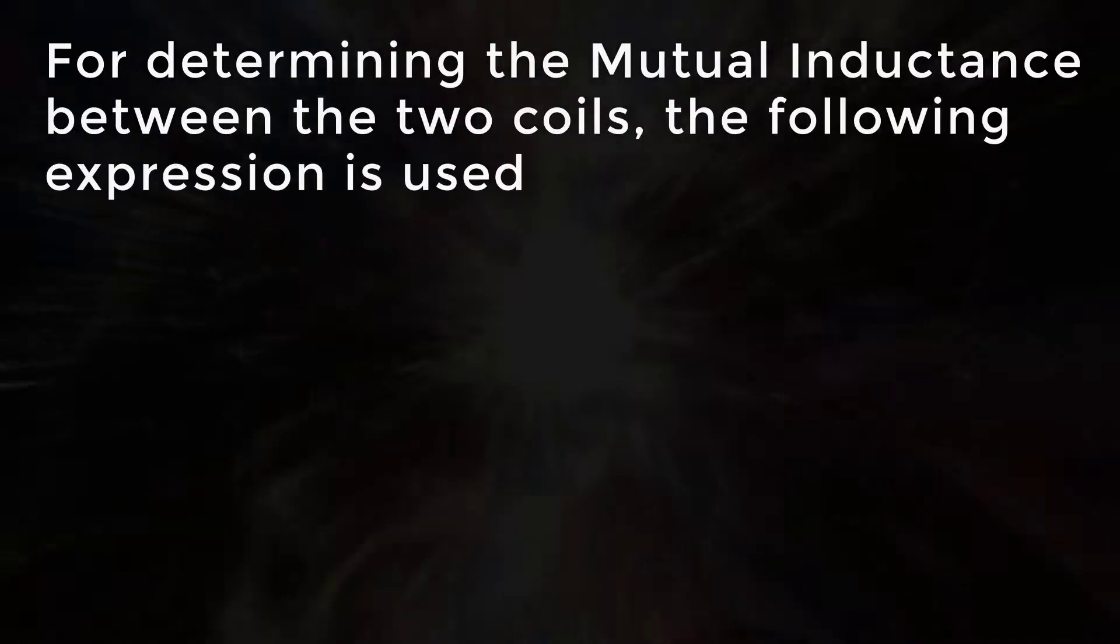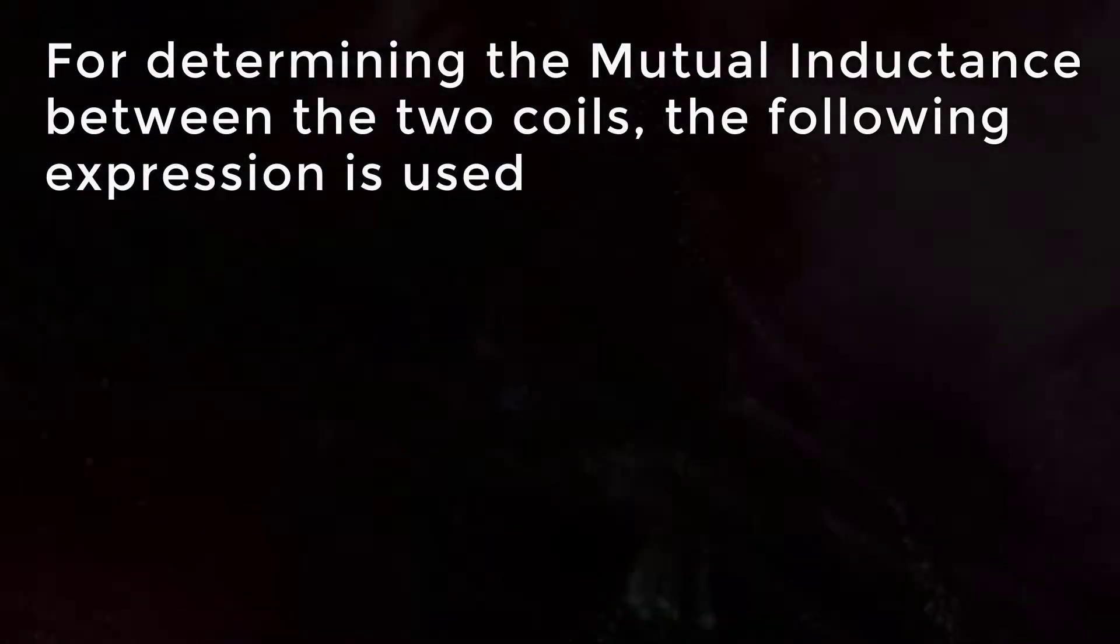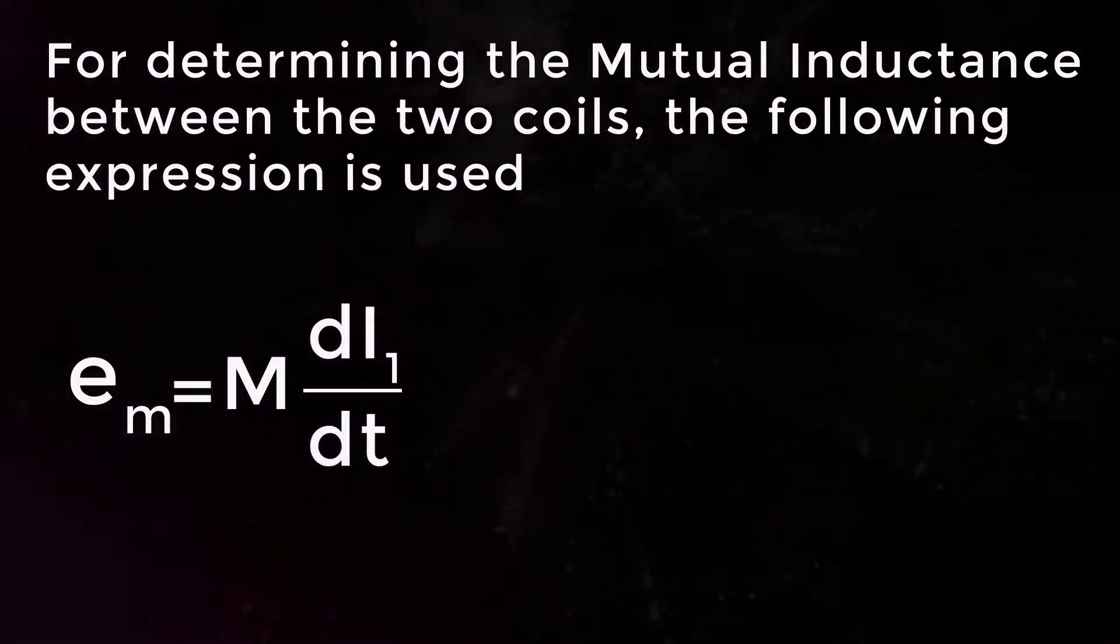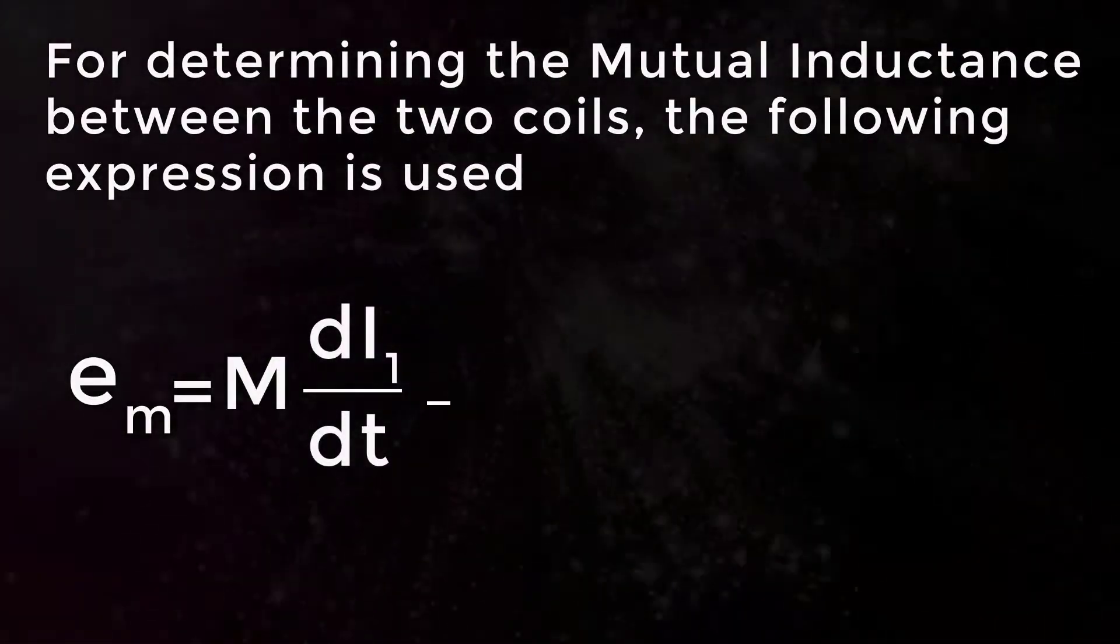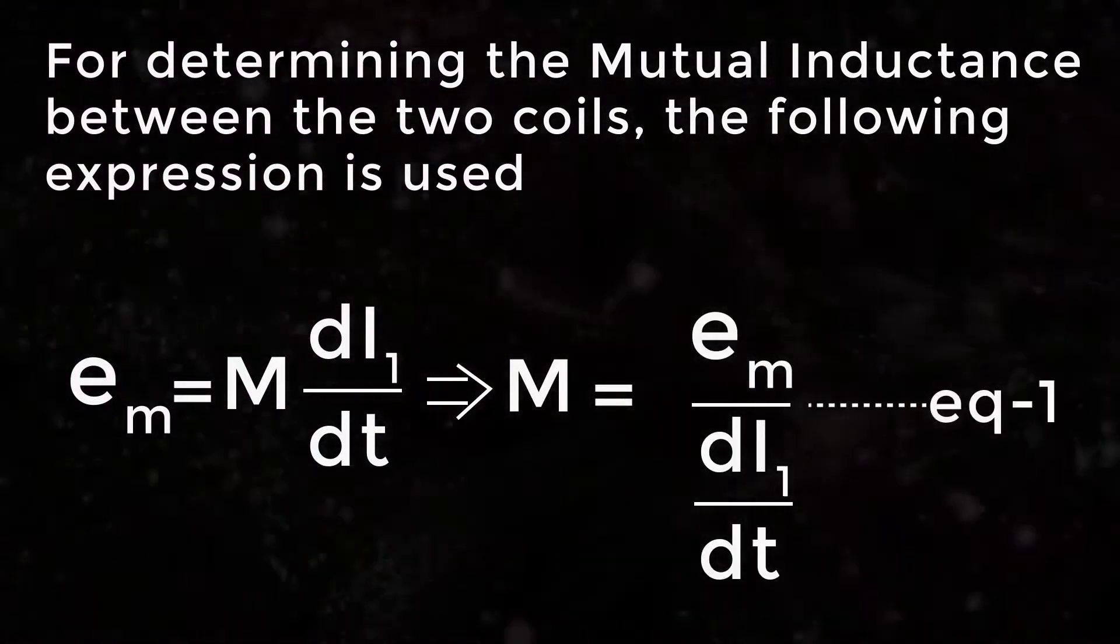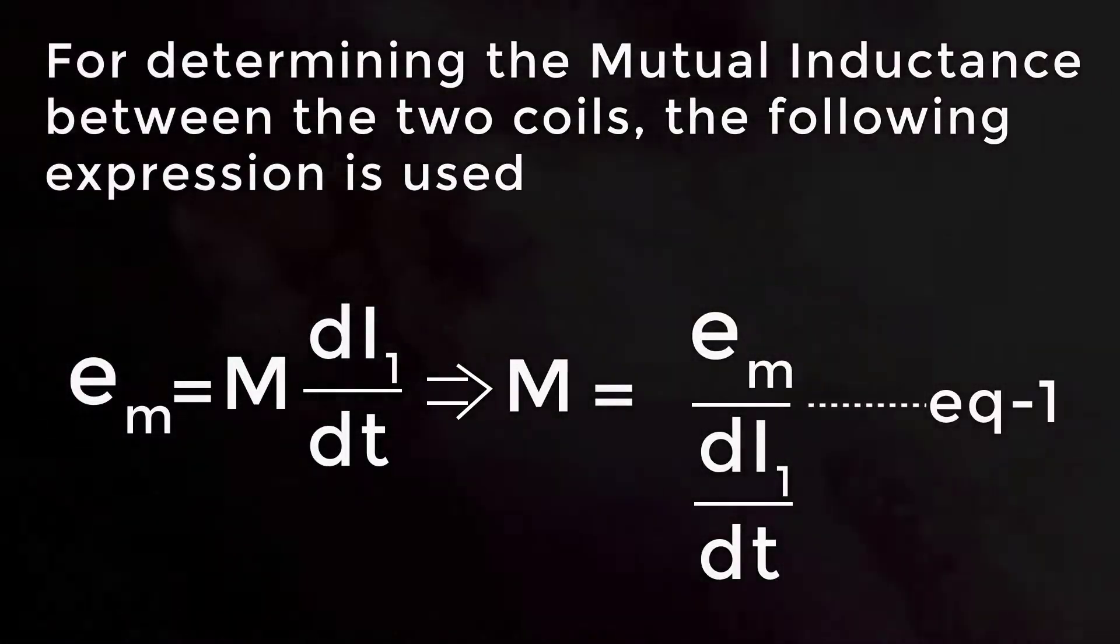For determining the mutual inductance between the two coils, the following expression is used: e_m equals M times dI₁ divided by dt, or M equals e_m divided by dI₁ by dt.